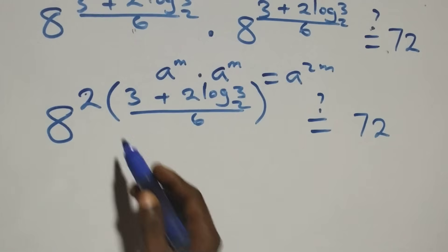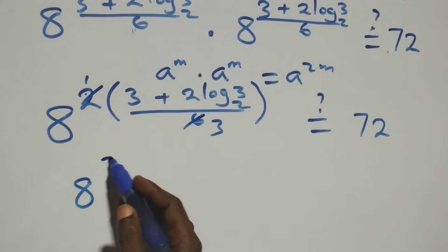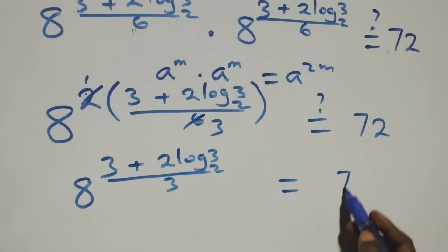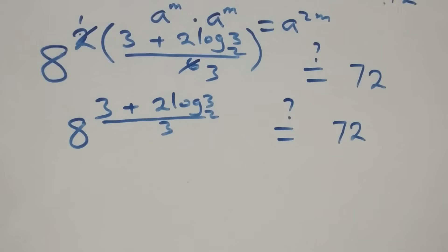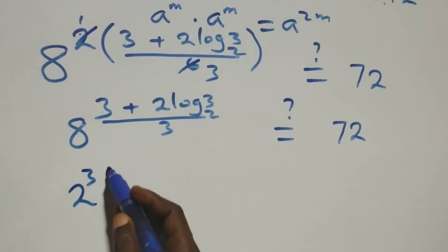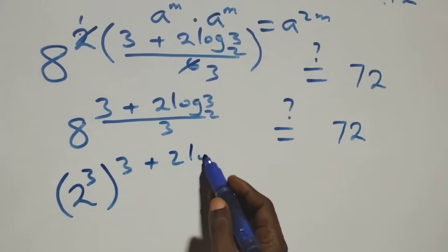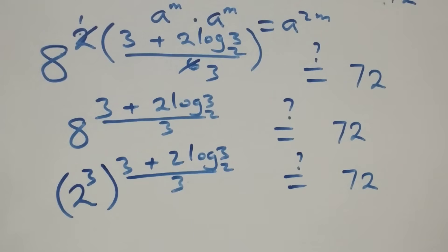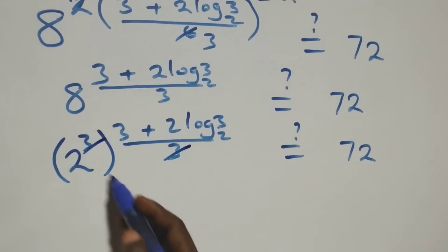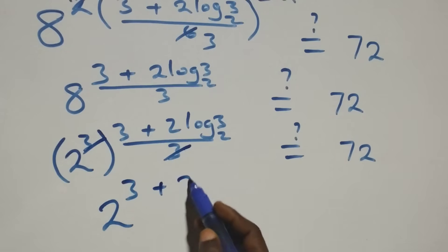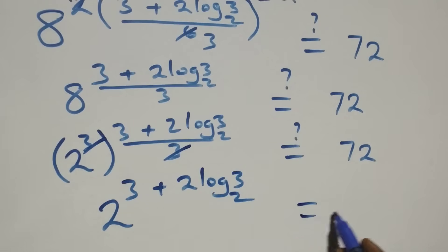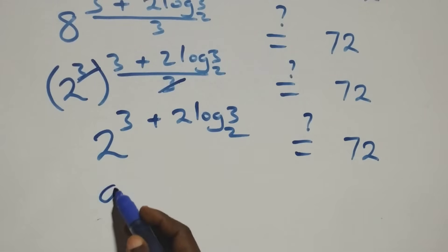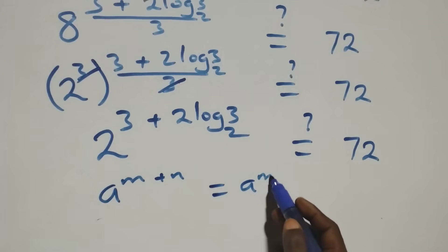We can write 8 as 2 cubed, so this is 2 cubed raised to power (3 plus 2 log 3 base 2) over 3. Next, we separate the exponent using the rule a raised to power (m plus n) equals a raised to power m times a raised to power n. This gives 2 raised to power 3 times 2 raised to power 2 log 3 base 2.